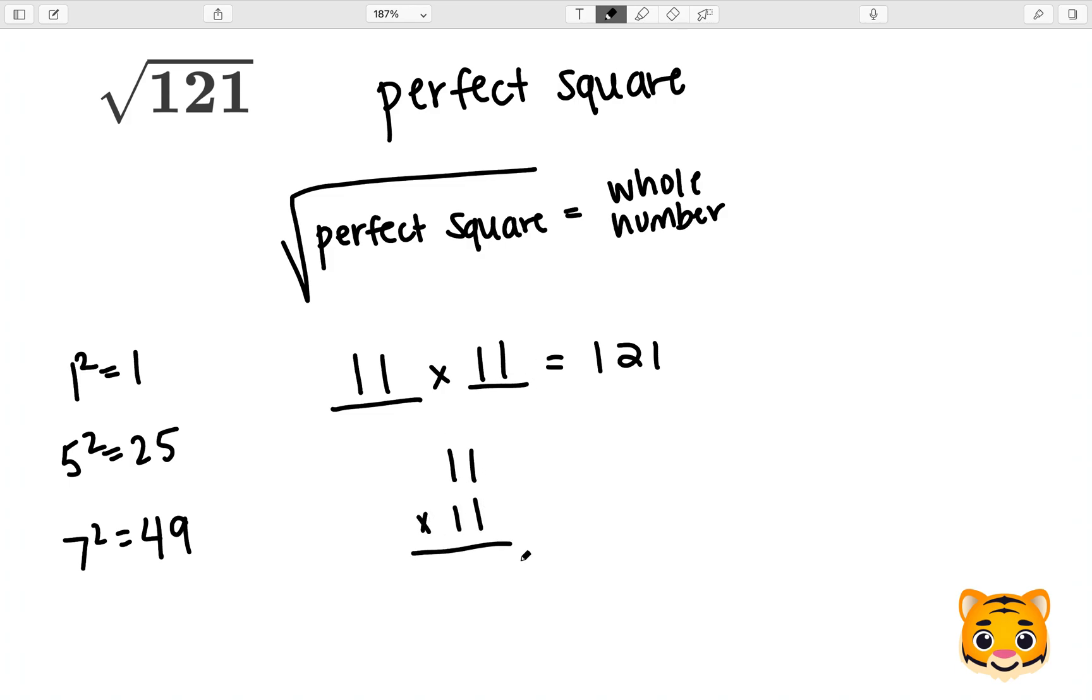I can show you how we can do 11 times 11 to get 121 by multiplying these values together. 1 times 1 gives us 1, again 1 times 1 gives us 1, we add our placeholder 0, and then repeat. 1 times 1 gives us 1, and 1 times 1 gives us 1. We can now see that 11 times 11 is 121.